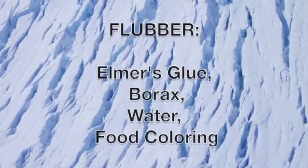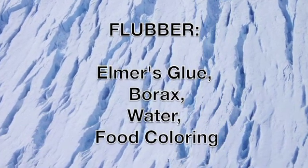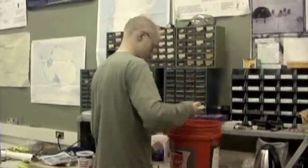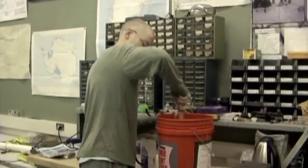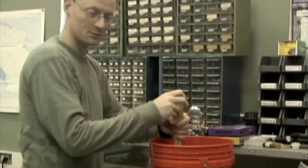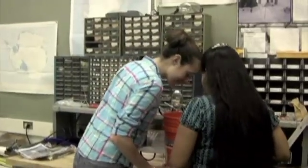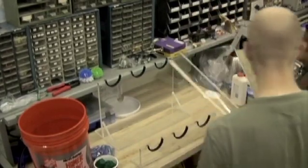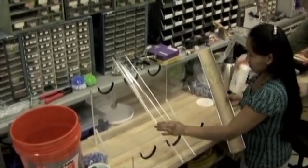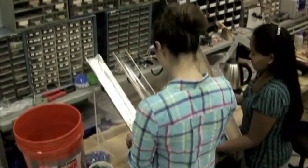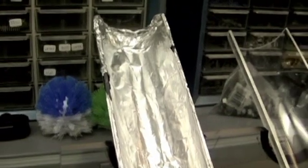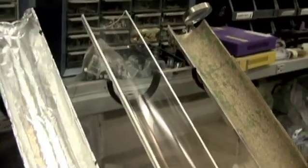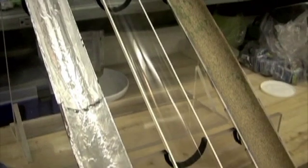Flubber is made out of four basic ingredients: glue, borax, water, and food coloring. You can make flubber yourselves — just refer to the recipe provided and add the ingredients in the right order. For our science experiment, we're setting up three pipes cut in half to represent the valleys that glaciers flow through. The inside of the pipes are coated with different materials to simulate the glacier flowing over smooth ground versus bumpy ground. The pipes are at an angle, so the flubber will flow downhill with gravity. The final step is to fill the top part of the valley with flubber, then let it flow.